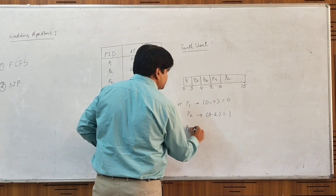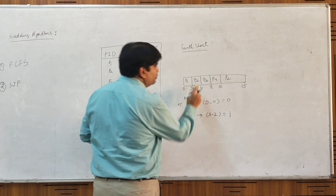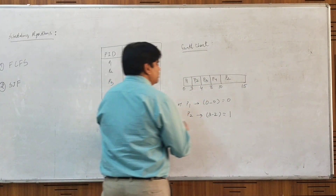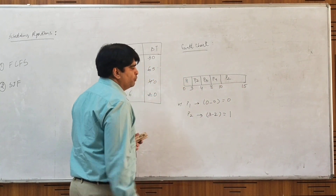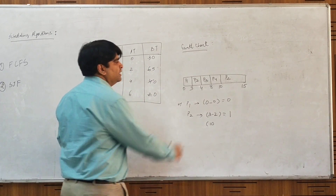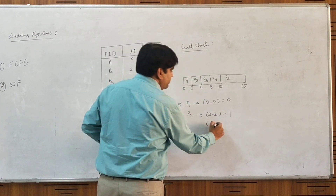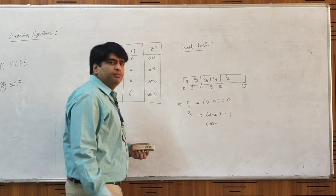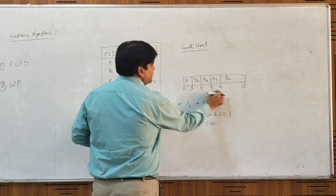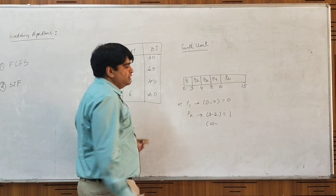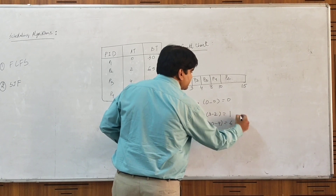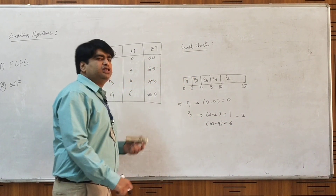For process P2, since it did not complete in one cycle — it starts its second cycle at t=10 and had released the CPU at t=4 — it was in waiting state for 10 minus 4 = 6 additional seconds. So the total waiting time of P2 is 1 plus 6 = 7 seconds. For P3, it started execution at t=4 and made the request at t=4, so 4 minus 4 = 0 seconds waiting.